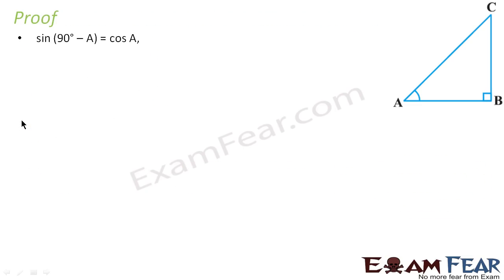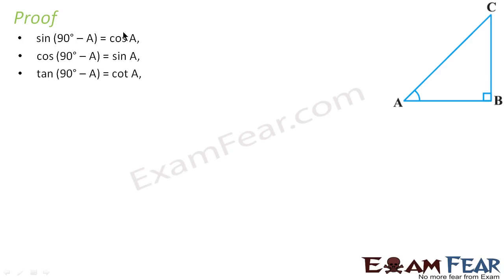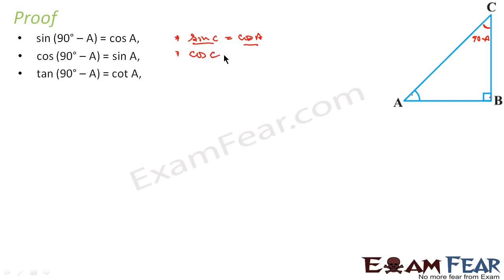Now let us go to the proof. We have to prove that sin(90° − A) = cos A, cos(90° − A) = sin A, and tan(90° − A) = cot A. To prove this, let us take triangle ABC. When we say sin(90° − A), this is nothing but sin C, because angle A is at A, angle B is 90°, so angle C is nothing but 90° − A. So what we have to prove is sin C = cos A, cos C = sin A, and tan C = cot A.